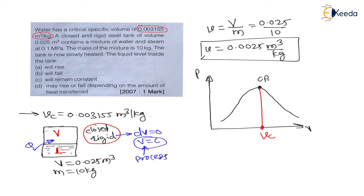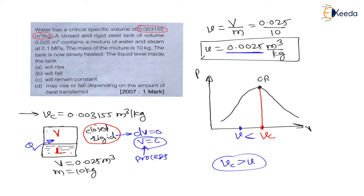The given specific volume of the vessel is 0.0025 m³ per kg. The critical specific volume is 0.003155 m³ per kg, which is more than 0.0025. Therefore, the given volume of the container is less than the critical volume, and state 1 is located to the left of the critical point on the P-V diagram.